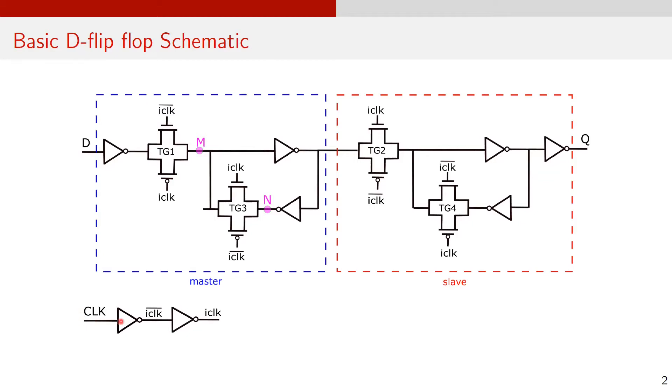The CLK signal passes through two inverters and generates internal signals I-clock and I-clock bar. These signals are used to control the transmission gates in the flip-flop.